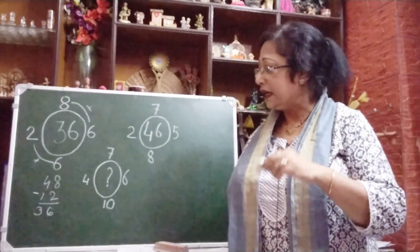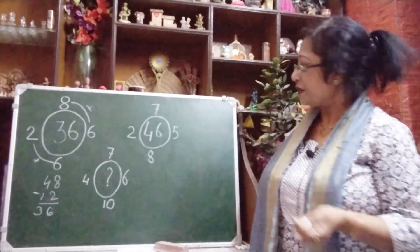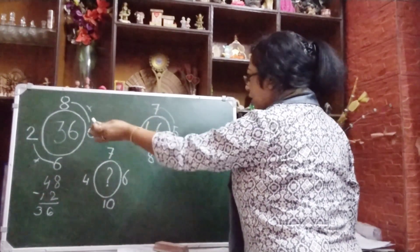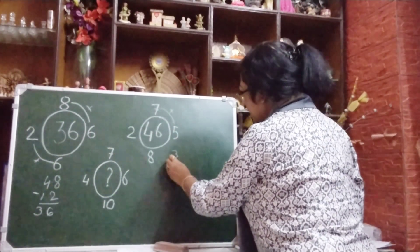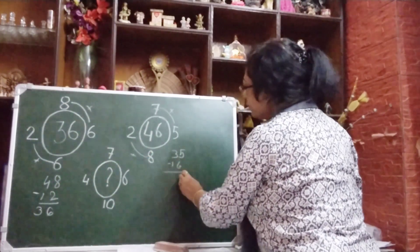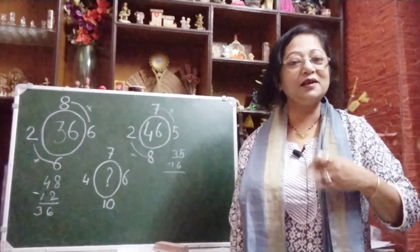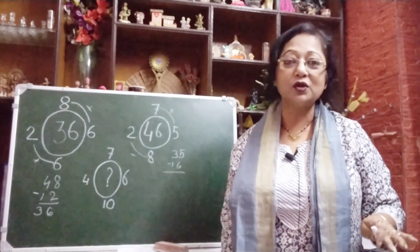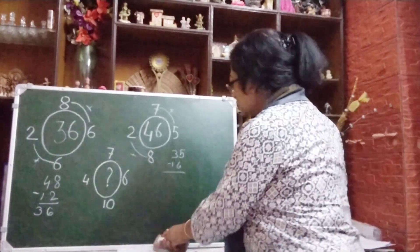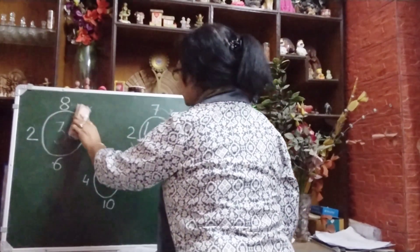Now let me check if this logic works for the next circle too. Here the middle number is 46. Using the same logic, if I multiply 7 and 5 I get 35, and 8 and 2 gives 16. If I subtract 16 from 35 I get 19, not 46 — so this logic is not working here. We cannot use this logic, so let me try something different.